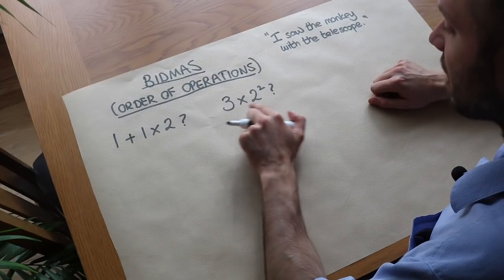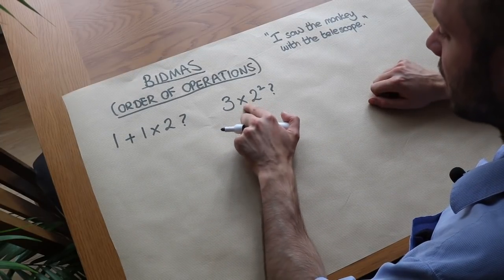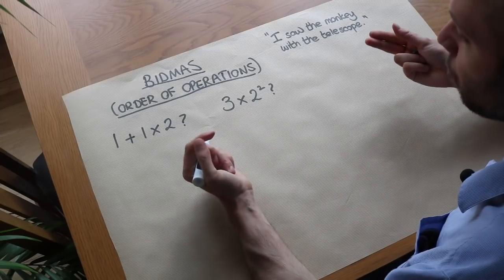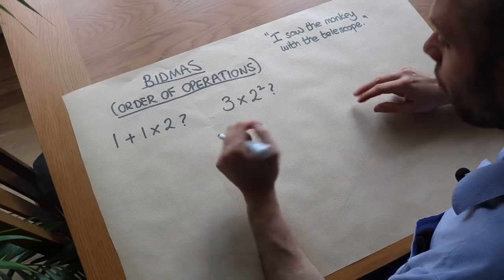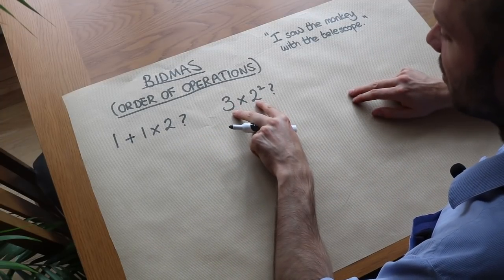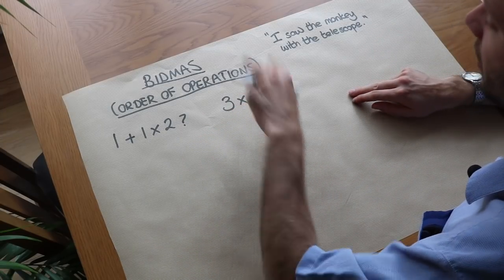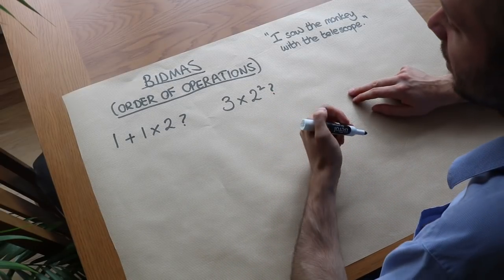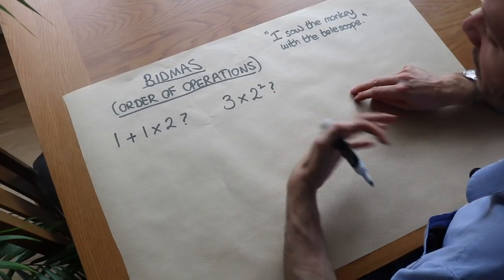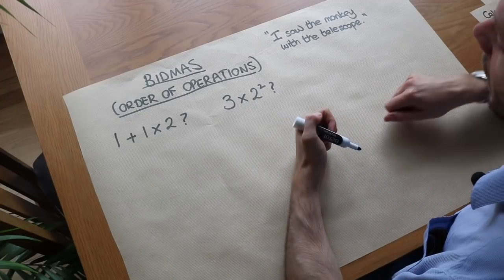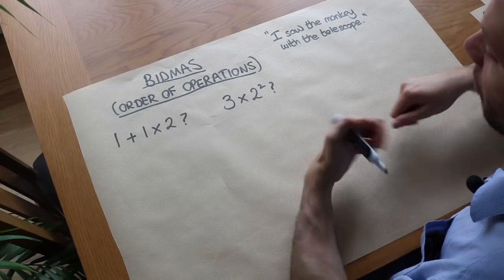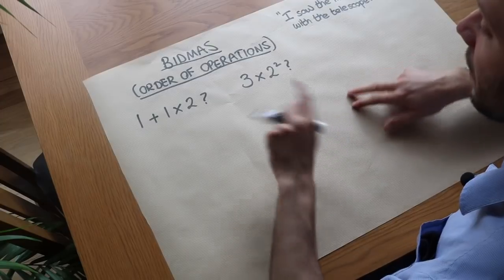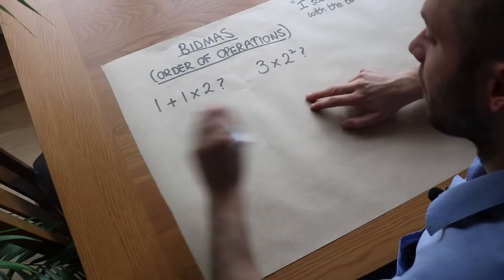It's the same here. Does 3 times 2 squared mean (3 times 2) squared, which would be 3 times 4 equals 12? Or do we mean (3 times 2) which is 6, then square it to get 36? We get different values in each case. So we have to have some way that we can all agree on how we interpret the structure of these symbols. And that's where BIDMAS comes into it.